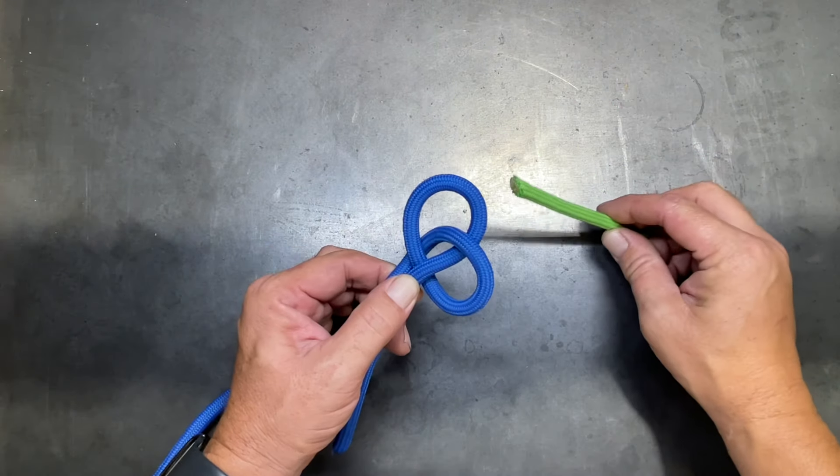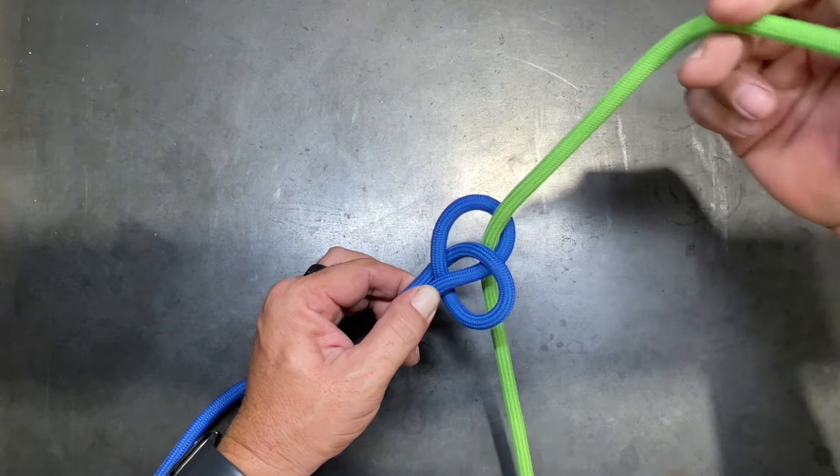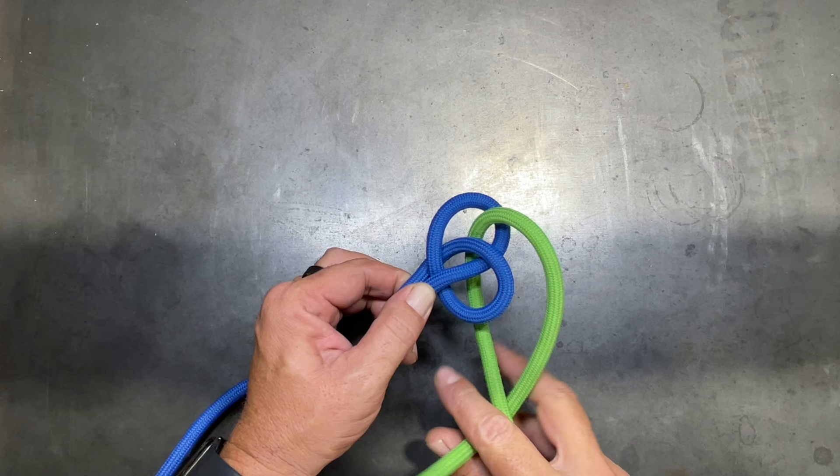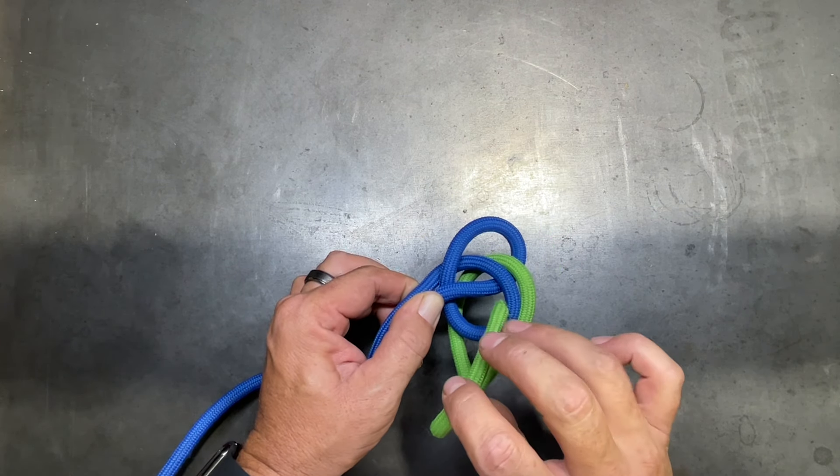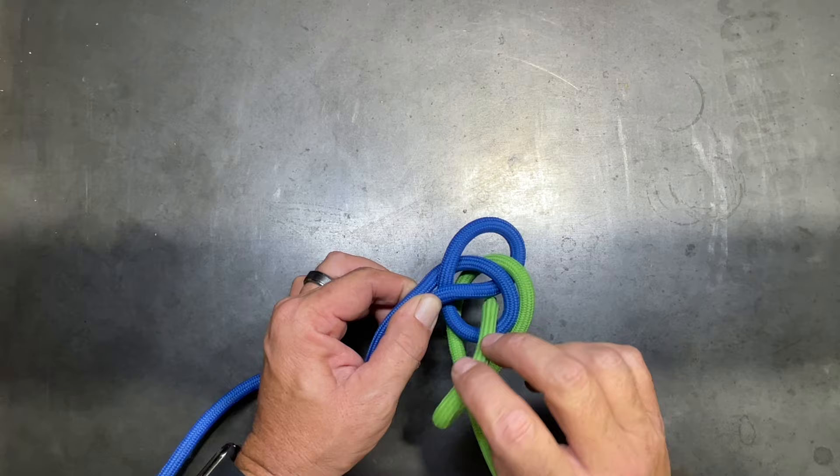Now just like before, up through the bottom of the top loop, pass it back under itself, and then going in the opposite direction, we'll pass through the bottom loop and the new loop that forms underneath of it.